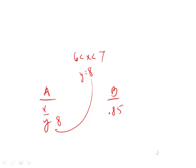In this quantitative comparison question, we're comparing two columns. Column A has x over y, and Column B has 0.85. We don't know x, but we know it's between 6 and 7, and we know that y equals 8, so we can already put this y down as 8. What we're going to look for here is the range.